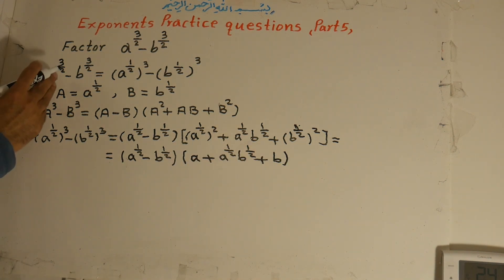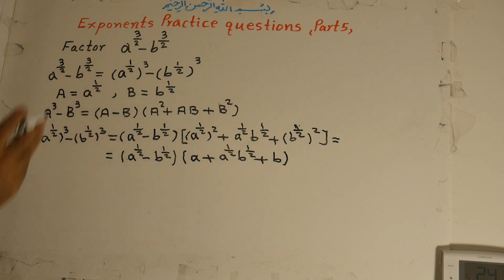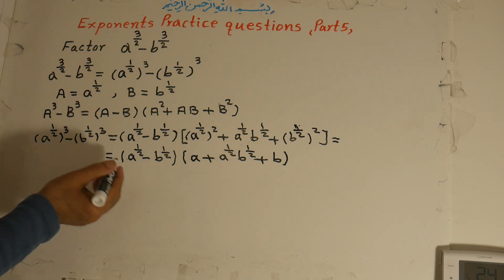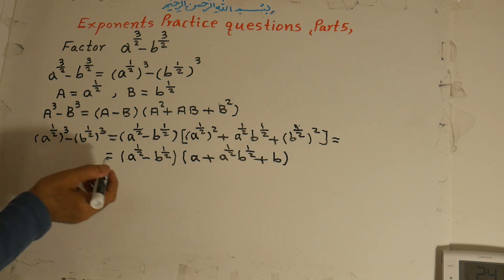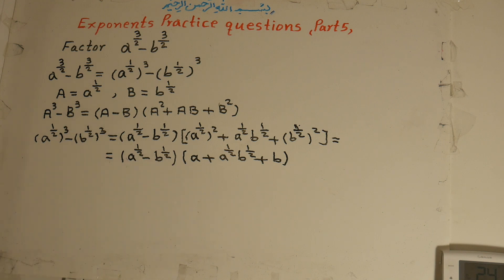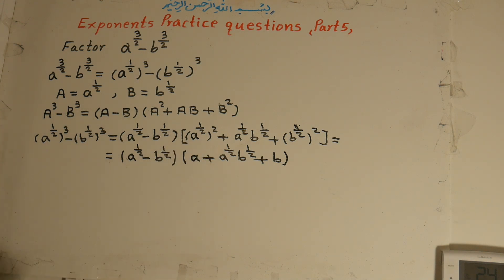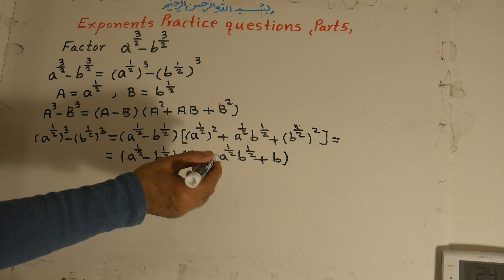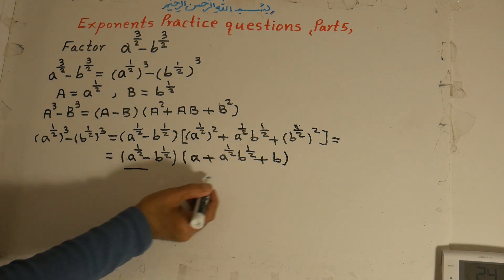So now, a to the power of 3 over 2 minus b to the power of 3 over 2 factors into two factors: the first factor is a to the power of 1 over 2 minus b to the power of 1 over 2, and the second factor is a plus a to the power of 1 over 2 times b to the power of 1 over 2, plus b. This is the answer.